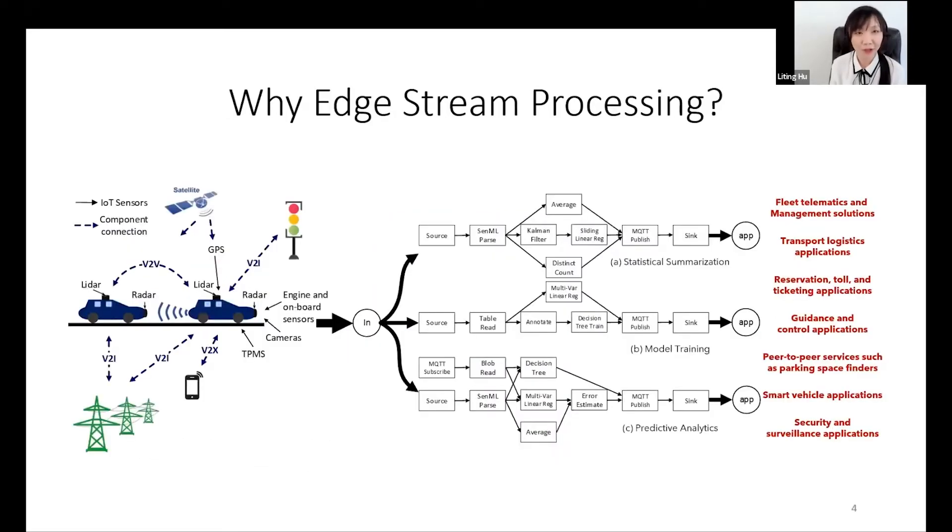Edge stream processing will have many interesting use cases. For example, for the future intelligent transportation system, all cars will be equipped with internet access. On the front end, each car generates a lot of data streams from lidar, radar, camera, cell phones, and many onboard sensors.